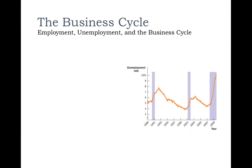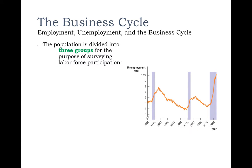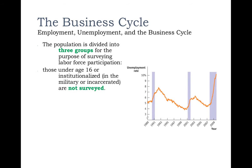Let's look at unemployment and employment in relation to the business cycle. When we talk about unemployment, we divide the population into three groups. The first group includes people under the age of 16, people in jail, and people in the military — for purposes of unemployment calculations, we don't count those people.